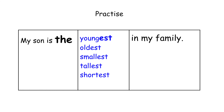Okay students, it is time to practice. Let's read these sentences. My son is the youngest in my family. My son is the oldest in my family. My son is the smallest in my family. My son is the tallest in my family. My son is the shortest in my family.